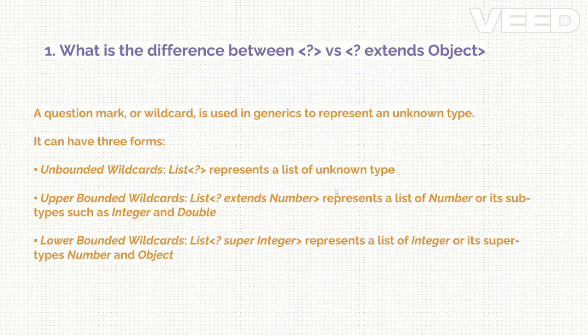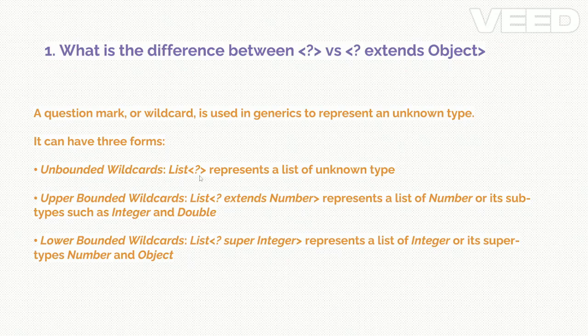What is the difference between '?' versus '? extends Object'? A question mark is a wildcard and it can have three forms: unbounded wildcards, upper bounded wildcards, and lower bounded wildcards. Unbounded wildcards means there is only a question mark, and it represents a list of unknown type. Upper bounded wildcards use the 'extends' keyword.